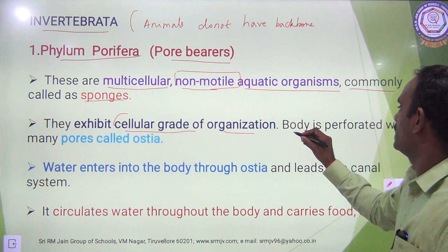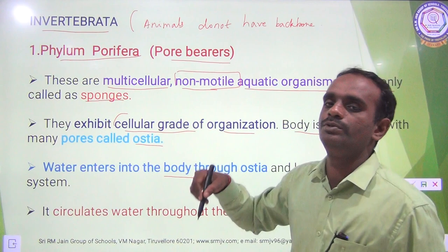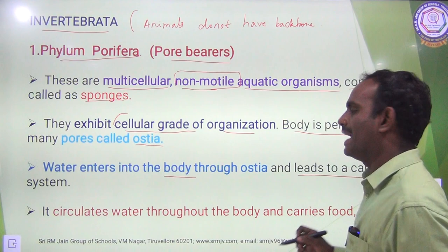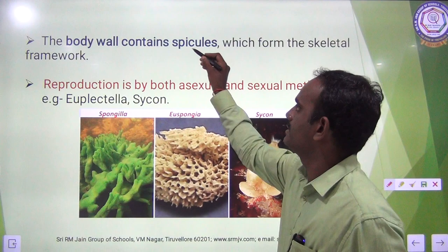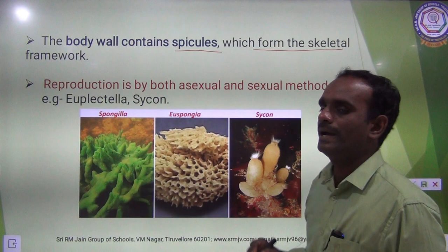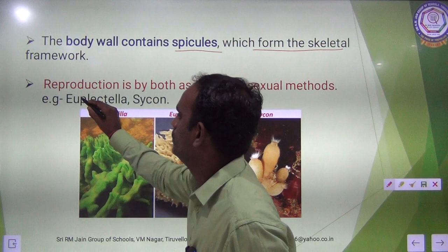The body is perforated with many small pores called ostia. Water enters into the body through the ostia and leads to a canal system. The canal system circulates water throughout the body and carries food and oxygen. The body wall contains spicules which form the skeletal framework. Reproduction is by both asexual and sexual methods. Examples for Phylum Porifera are Euspongia and Sycon.